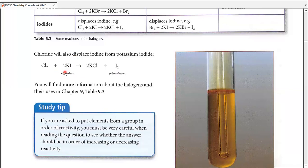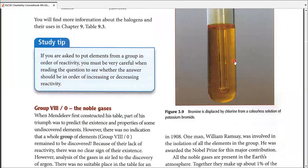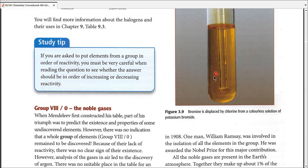There are some equations written. Cl2 plus 2KI gives us 2KCl plus I2. This is the diagram to show how the orange-brown color of bromine shows in potassium bromide or other substances.